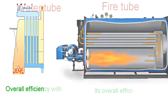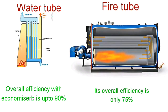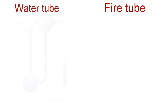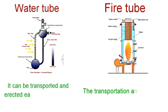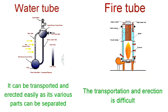In case of a water tube boiler, its overall efficiency with an economizer is up to 90%, whereas in case of a fire tube boiler its overall efficiency is only 75%. The water tube boiler can be transported and erected easily as its various parts can be separated, whereas in case of a fire tube boiler the transportation and erection is difficult.